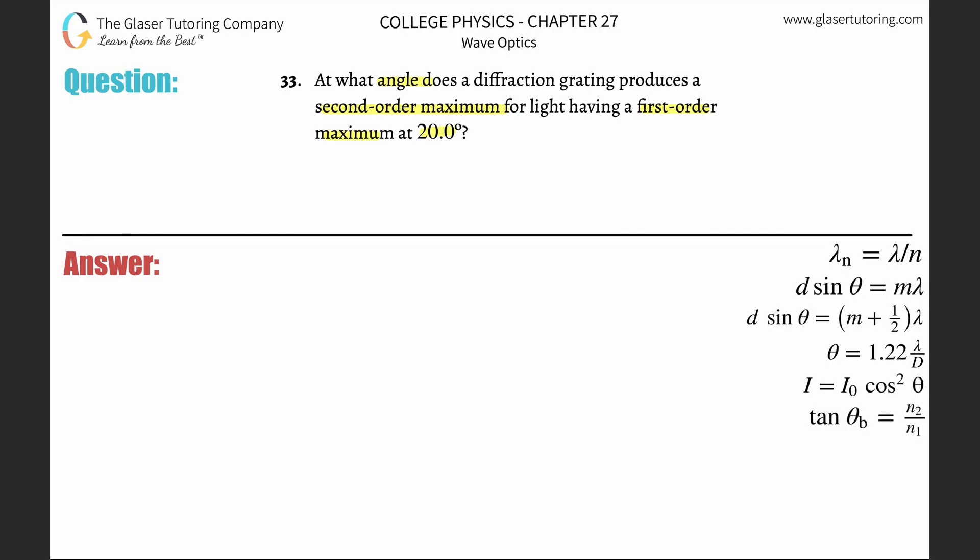What you can do with this problem is create two equations with the constructive formula. They're talking about a maximum, so that's why we're using that formula. Basically, d sine theta is going to equal m lambda. We'll do this for the first order.